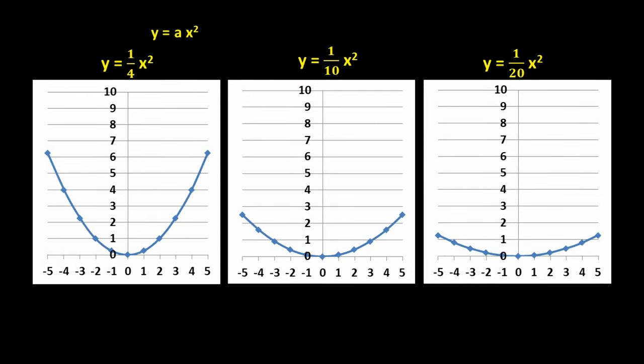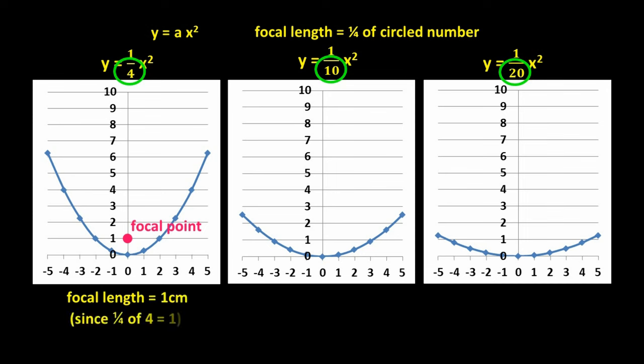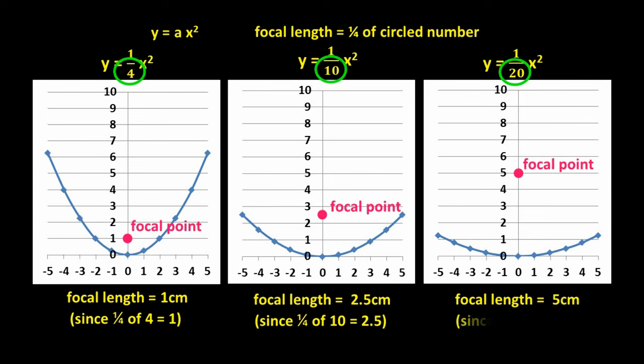It turns out that the focal length of every parabolic reflector equals a quarter of the denominator, the numbers being circled, if the equation is expressed as y equals one over a number x squared. If you draw the graphs onto graph paper and measure everything in centimeters, a y equals one-quarter x squared graph has a focal length of one centimeter, since a quarter of four is one. And a y equals one-tenth x squared graph has a focal length of 2.5 centimeters, since one-quarter of ten equals 2.5. So what's the focal length of a y equals one-twentieth x squared graph? If you said five centimeters, you're correct.